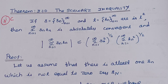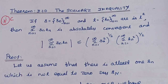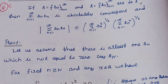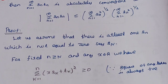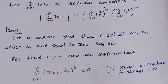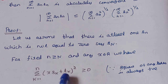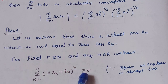For the proof, let us assume that there is at least one Sn which is not equal to 0. For fixed n greater than or equal to N, and any real x, we consider the summation k=1 to n of (x·Sk + Tk) squared, which is greater than or equal to 0.